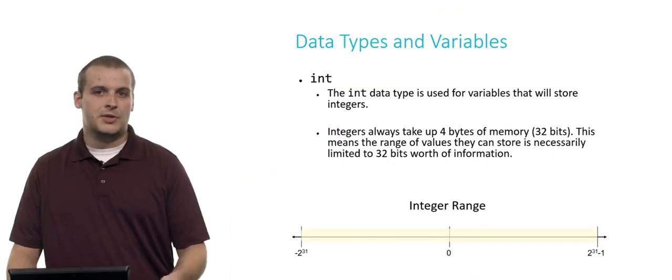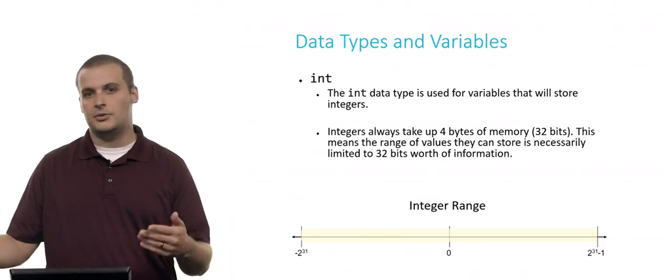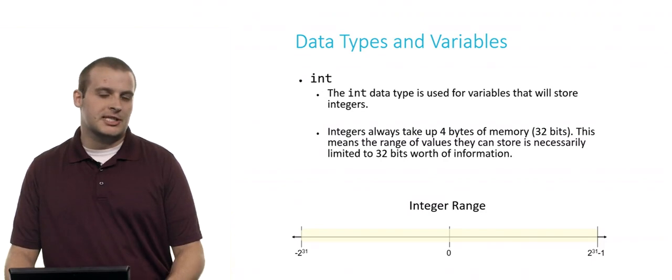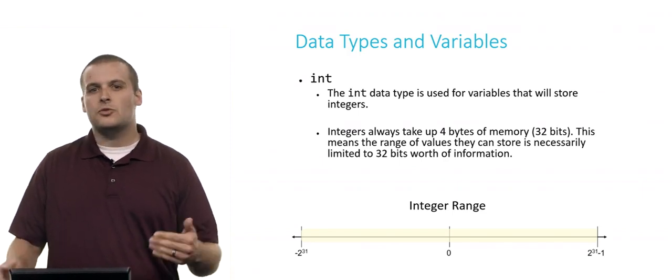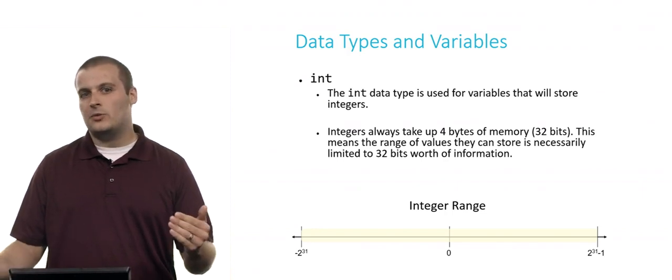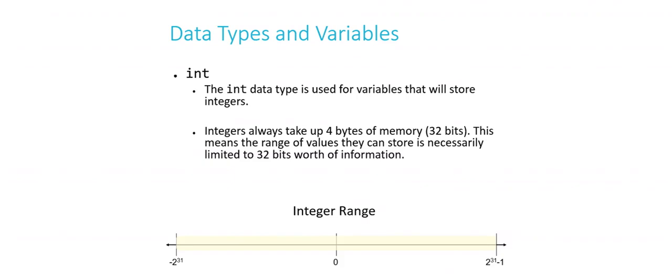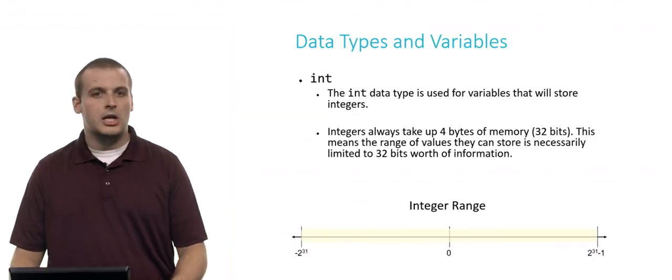So C comes with some built-in data types. The first is int. The int data type is used for variables that will store integer values, like 1, 2, 3, negative 1, 2, 3, and so on. Integers always take up four bytes of memory, which is 32 bits. So this means that the range of values that an integer can store is limited by what can fit within 32 bits worth of information. It was long ago decided that we would split up that range of 32 bits into negative integers and positive integers, each getting half of the range. So the range of values that we can represent with an integer range from negative 2 to the 31st power to 2 to the 31st power minus 1. So basically, half of the possible values that you can fit in an int are negative, and half are positive. And roughly here, this is about negative 2 billion to about positive 2 billion.